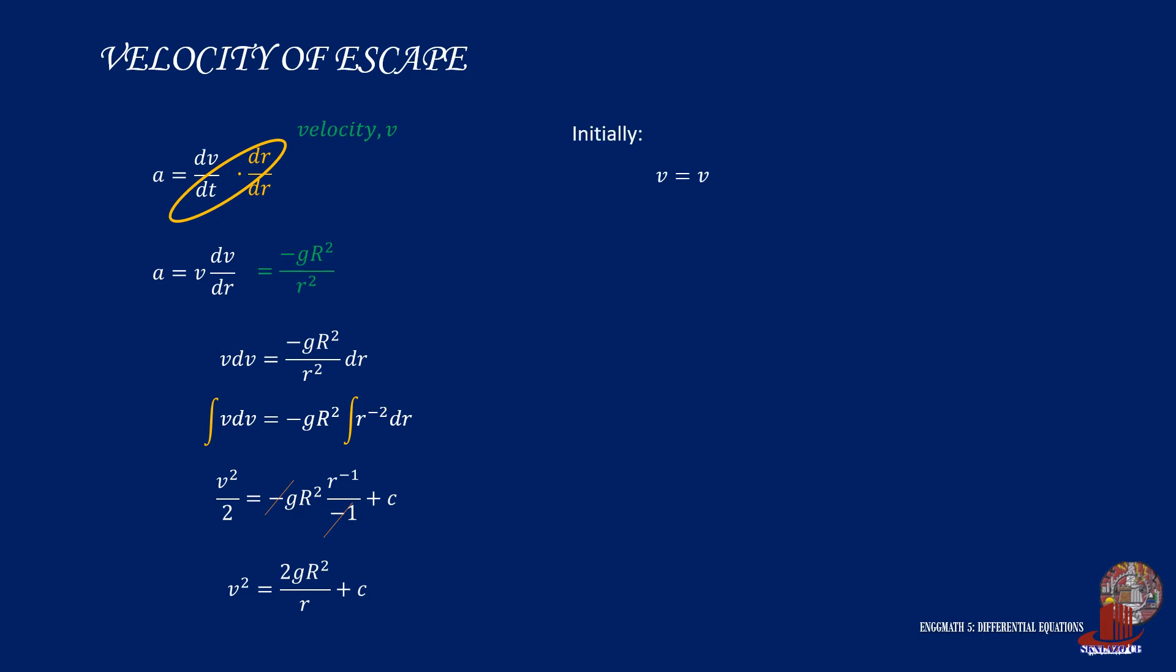We continue to determine the particular solution where we take the initial situation. So at the start, v will be denoted as v0 and if we take the initial placement of the particle, it will be located at the surface of the body it will escape from. So small r is capital R this time. Plug these values to have the following equation where we can simplify capital R. Thus,